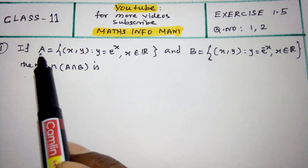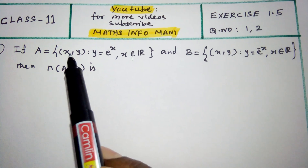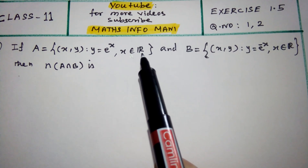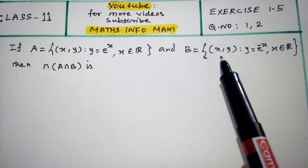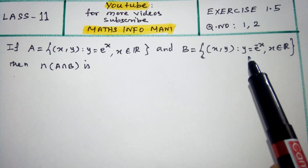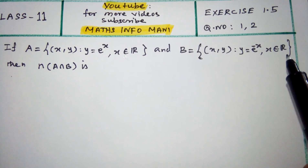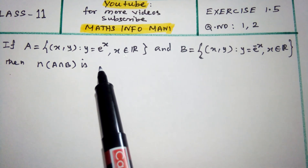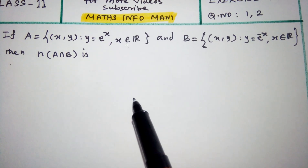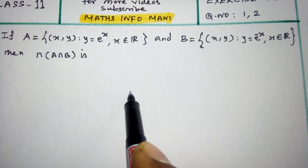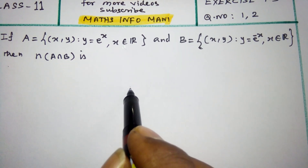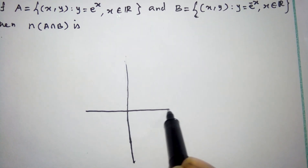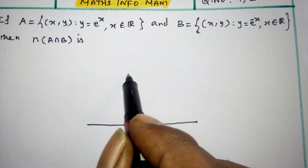The first question is: if A is equal to the set of (x, y) such that y is equal to e power x for all x belongs to R, and B is equal to the set of (x, y) such that y is equal to e power minus x for all x belongs to R. Then n(A intersection B) is?